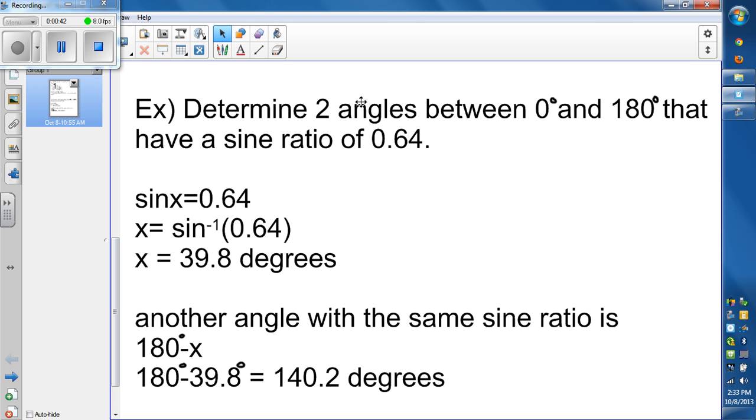Second example, determine two angles between 0 degrees and 180 degrees that have a sine ratio of 0.64. Sine of x is equal to 0.64.